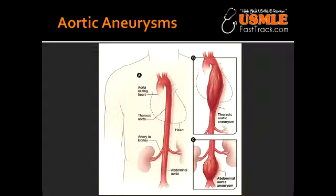What is aortic aneurysm at the level of the ascending aorta commonly associated with? Aortic aneurysm at the level of the ascending aorta is commonly associated with Marfan syndrome, and it is called idiopathic cystic medial degeneration.